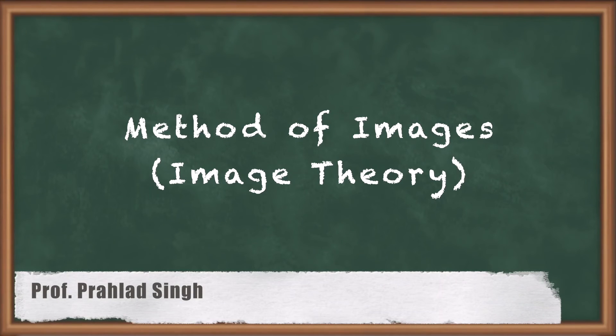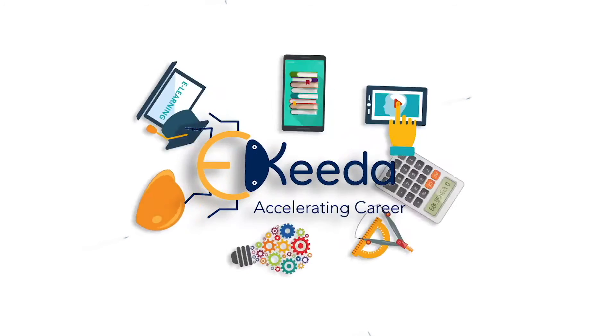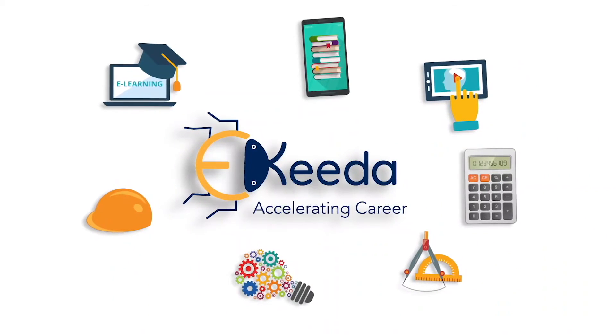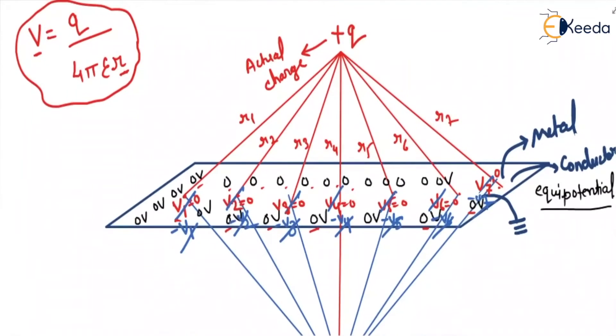Hello students, in this video we will start method of images, or it is also called as image theory. So let us understand this diagram first. This is a conductor, we can say it is a metal conductor.